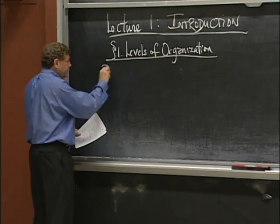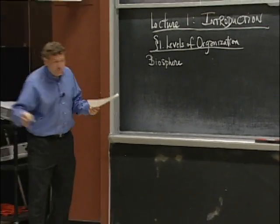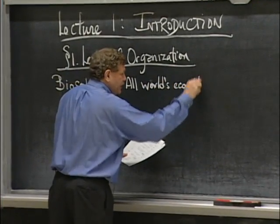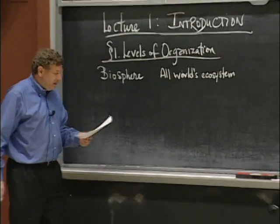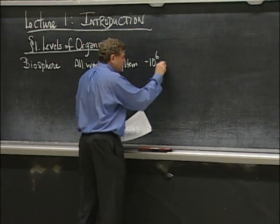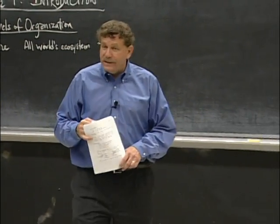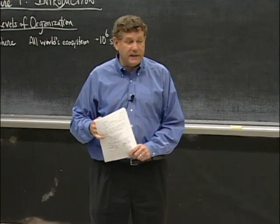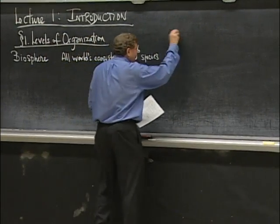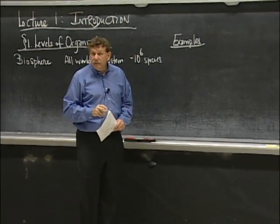I want to point out the levels of organization of life and indicate where we will be. You could decide to study the entire biosphere. By the biosphere, I mean everything, all the world's ecosystems working together to create a happy, healthy living planet. There are something like 10 to the sixth eukaryotic species on this planet, more than a million species of things you can see with your eye.